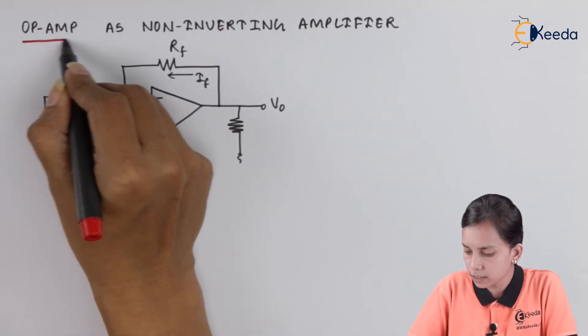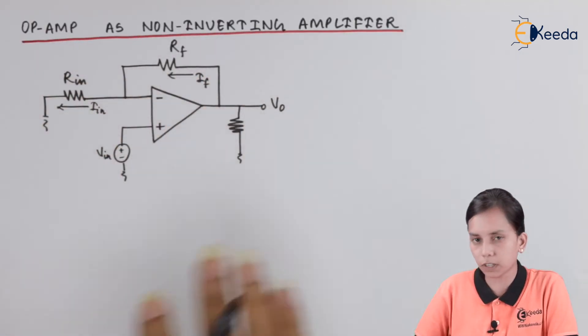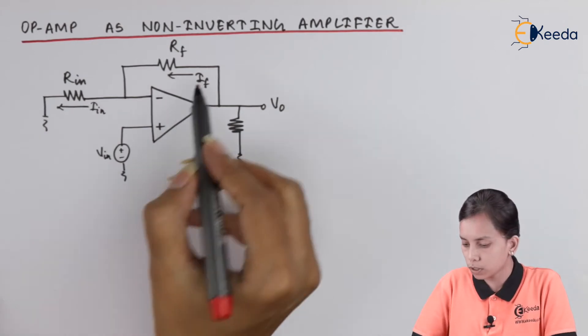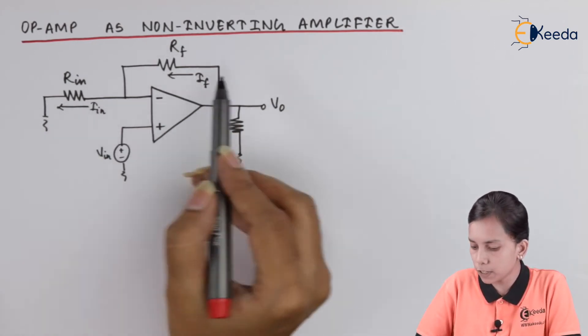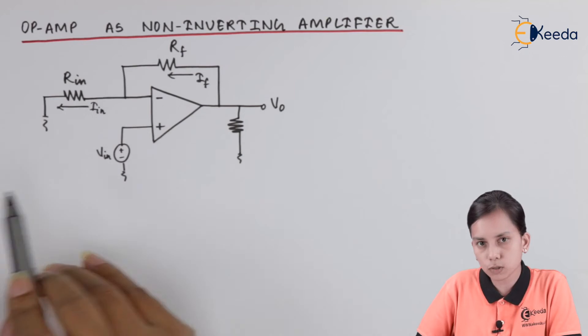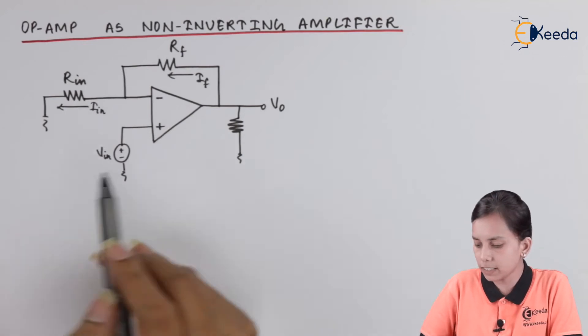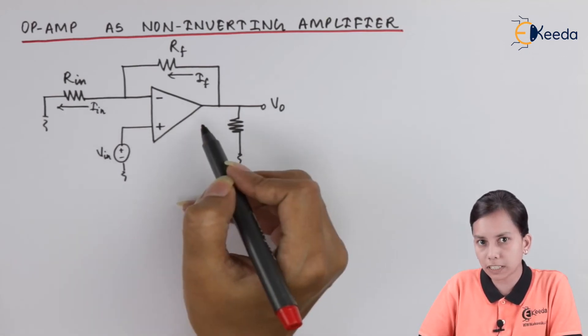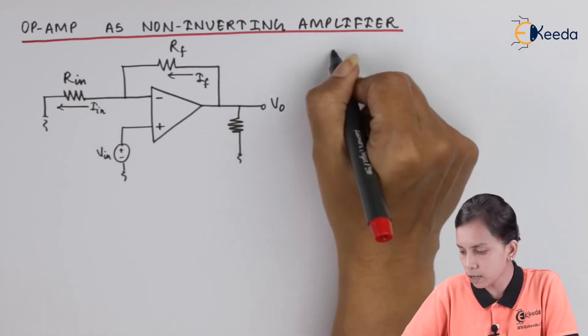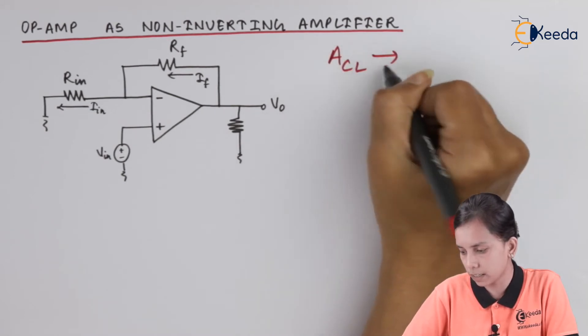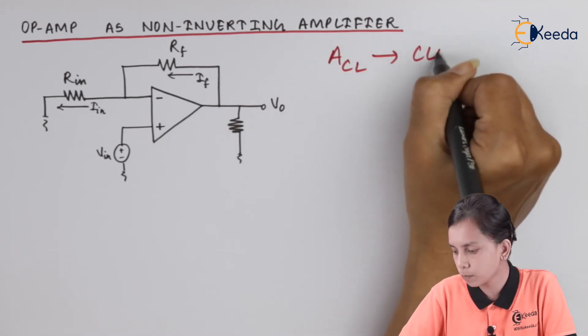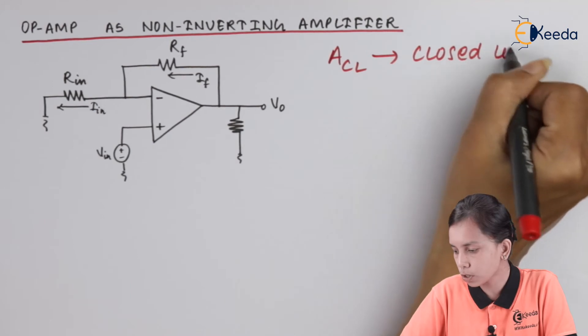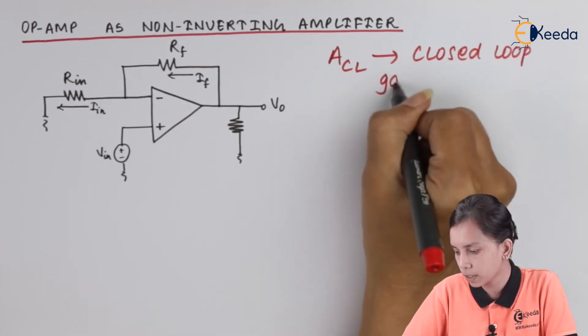Let us first look at the block diagram of an OPAM, then we will derive the gain. This is the circuit diagram of OPAM as a non-inverting amplifier, in which the feedback resistor is already connected. That is why we are interested in calculating the gain, which is ACL — the closed loop gain.